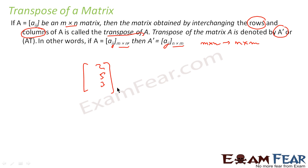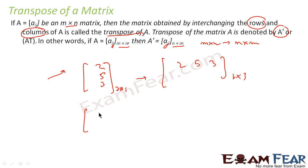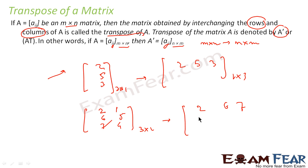For example, if you have the matrix [2, 5, 3] which is of order 3×1, and you make its transpose, the column becomes the row of the new matrix, and it becomes 1×3. Another example: take the matrix [[2,6,7],[1,5,4]], which is a 3×2 matrix. When you transpose it, rows become columns and columns become rows, giving a 2×3 matrix. So mathematically aij becomes aji.